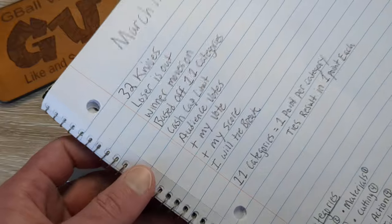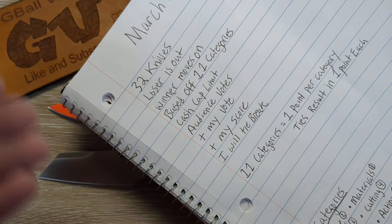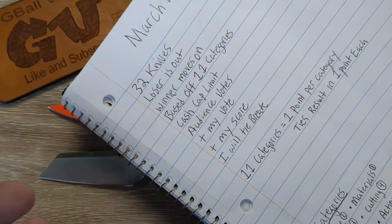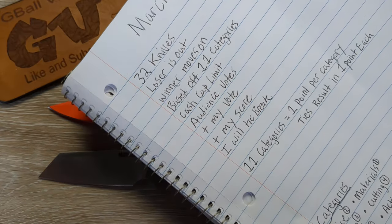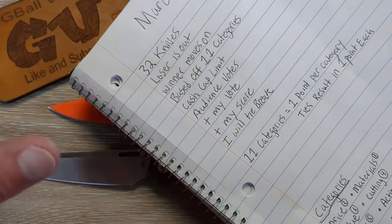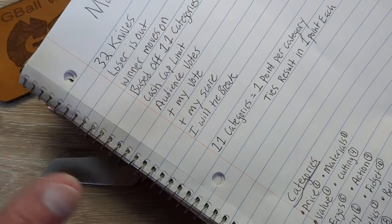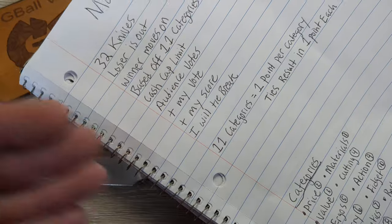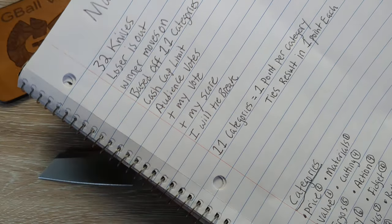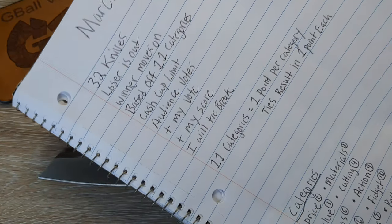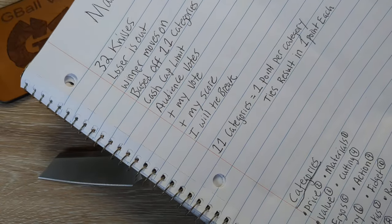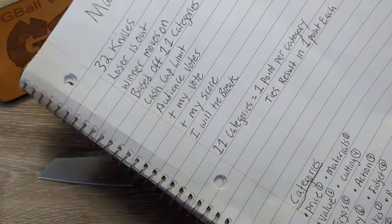Now there is a cap limit to the knife that can be in this matchup. Nothing will be over $100. So we have the 11 categories down here and then we have a little bit of rules. This is kind of just a rough draft. All based off all 11 categories. The cash cap limit is going to be $100.